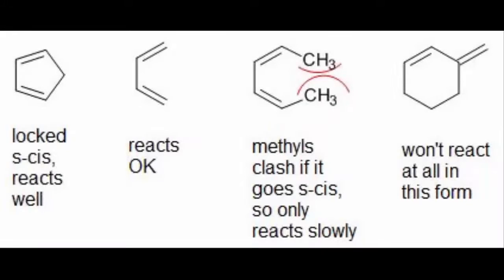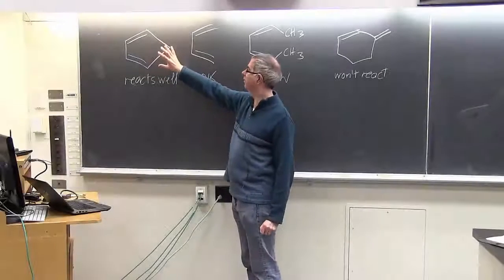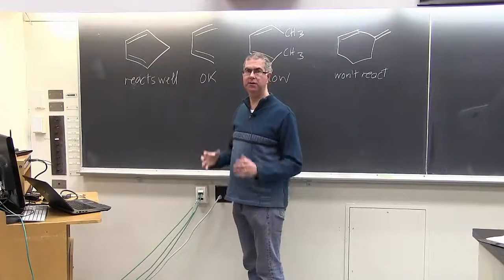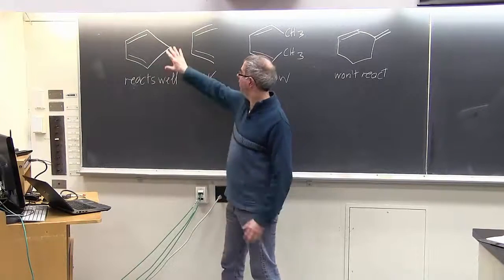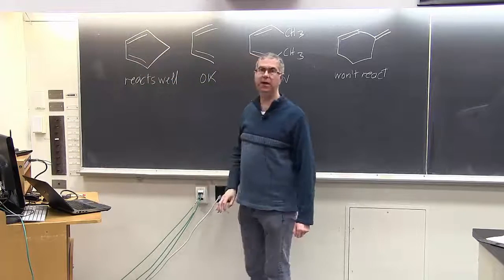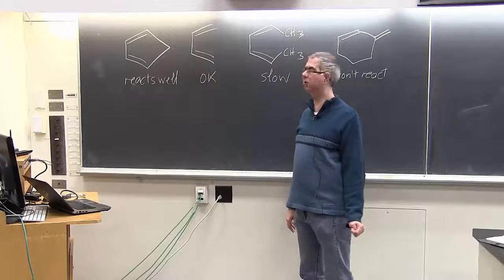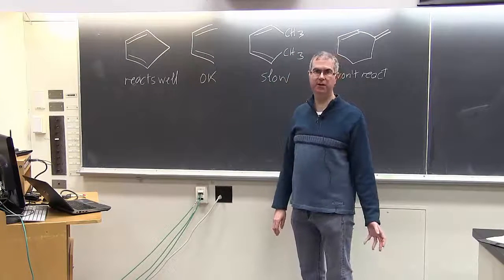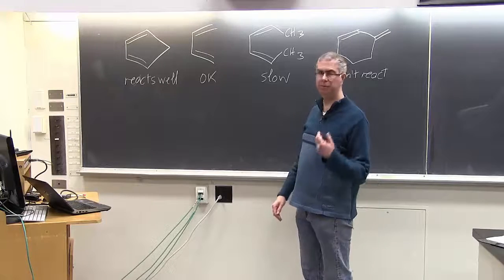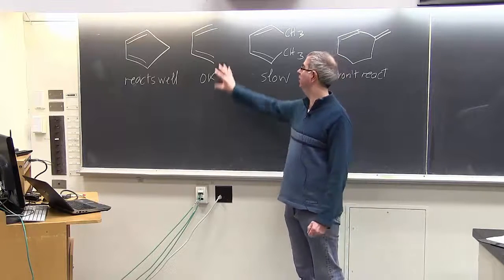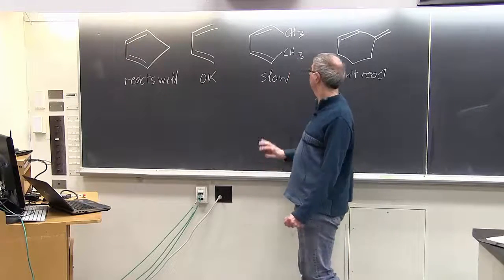Let's look at some sample dienes here. And the cyclopentadiene ring compound is locked in the S-cis form. So that reacts very quickly. The butadiene reacts moderately well. You have to heat it. Maybe takes a little bit of time, but it'll react pretty well.